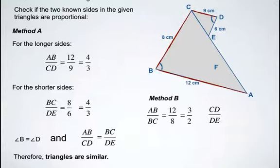So we have a 9 to 6 ratio which can be reduced again to 3 over 2.